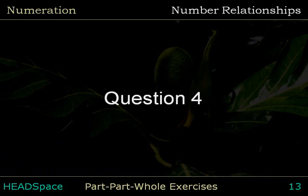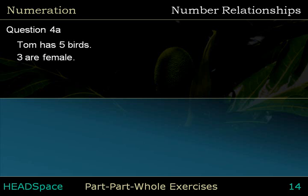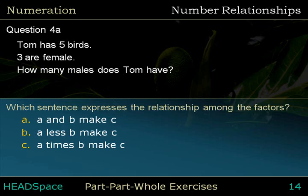Question 4, Question 4a. Tom has 5 birds. 3 are female. How many males does Tom have? Which sentence expresses the relationship among the factors? The answer is...